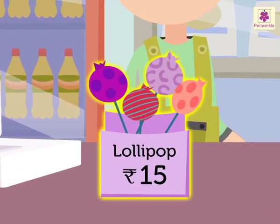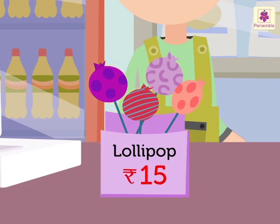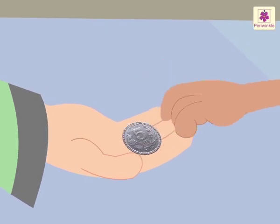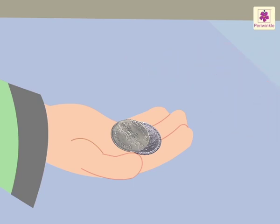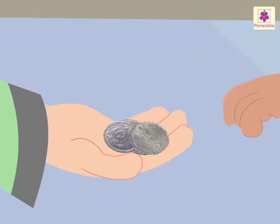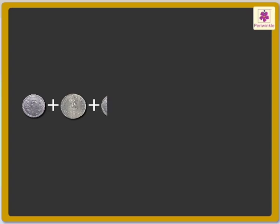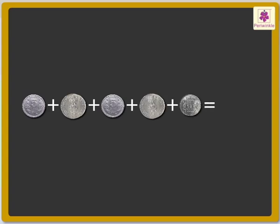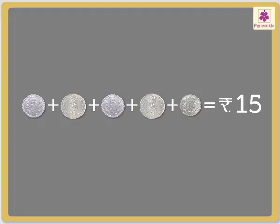The cost of the lollipop is 15 rupees. Saira gives a 5 rupee coin, then a 2 rupee coin, then another 2 rupee coin, and at last a 1 rupee coin. It means she gave 5 plus 2 plus 2 plus 1, which is equal to 15 rupees, to the shopkeeper.